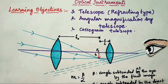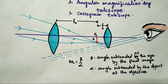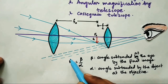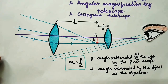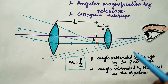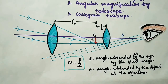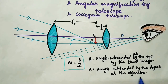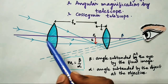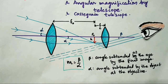When we talk about the magnification produced by the telescope, it is the ratio between two angles, denoted by alpha and beta. Beta is the angle subtended at the eye by the final image — the eye is here and the final image is somewhere here, so the angle subtended is beta. Alpha is the angle subtended by the object at the objective; this is also alpha.